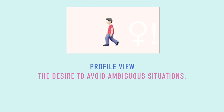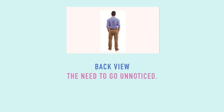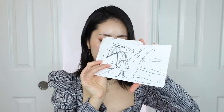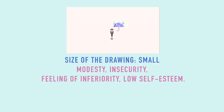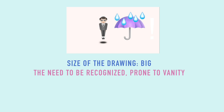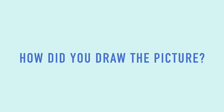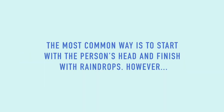For the human figure: front view means the ability to confront difficult situations, profile view means the desire to avoid ambiguous situations, and back view means the need to go unnoticed. I drew the front view. For size: small indicates modesty, insecurity, or low self-esteem, while big indicates a need to be recognized and a tendency toward vanity. I'm more on the big side.